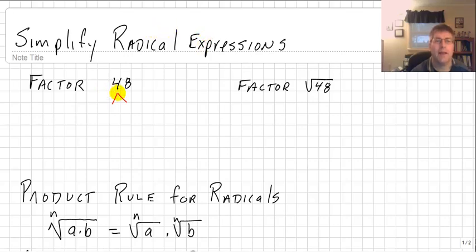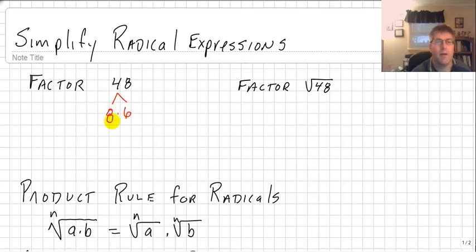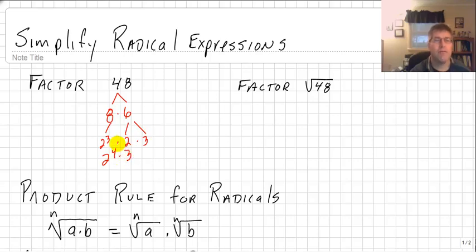Let's go back a little bit and factor 48 using a factoring tree. Factors of 48 are 8 times 6. We can continue to factor: 8 is 2 cubed and 6 is 2 times 3, so 2 cubed times 2 to the first is 2 to the fourth times 3. So we can factor 48 as 2 to the fourth times 3 to the first power.